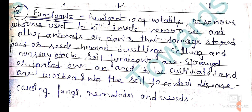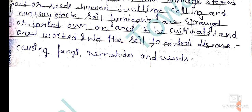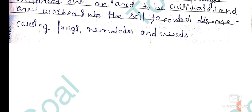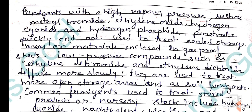clothing, and nursery stock. Soil fumigants are sprayed over an area to be cultivated and are worked into the soil to control disease-causing fungi, nematodes, and weeds. Fumigants with a high vapor pressure, such as methyl bromide,